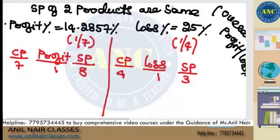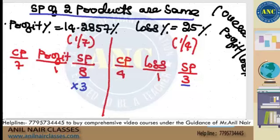Question. Selling price of two products are same. This is 8 and it is 3. Take the LCM beta. LCM of 8 and 3 is 24. It is into 3 and into 8.